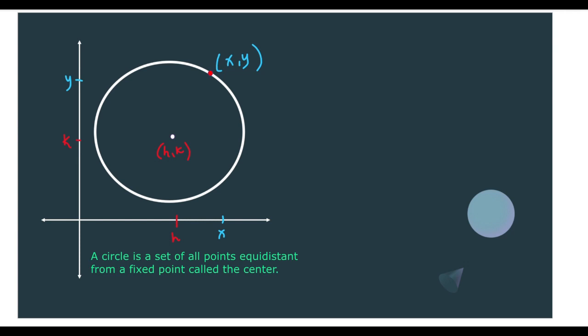Going back to the definition of a circle, it says that it is a collection of all points that are equidistant from a fixed point called the center. So if we would get any point on the circle and then we would like to get the distance to the center, we would always get the same value. And that distance is called the radius, or let us use r for the radius.